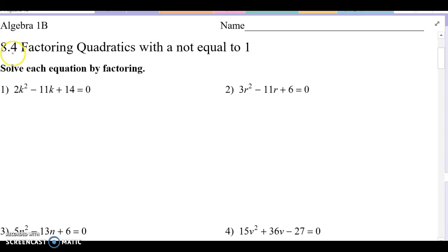This is algebra 1b, section 8.4, factoring quadratics when the leading coefficient is not equal to 1. So we'll jump right into our first problem here. We have 2k squared, and there's nothing that goes into all three of those terms, which means we're going to use this method we call split middle term. 2 times 14 is 28. Then I'm looking to see what two numbers multiply to 28 and add up to this middle term of negative 11. So I can go by starting with 1, 1 and 28 doesn't work.